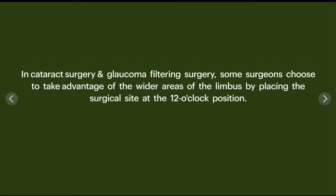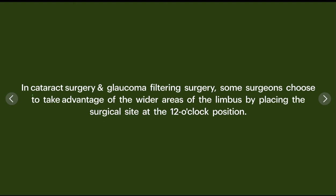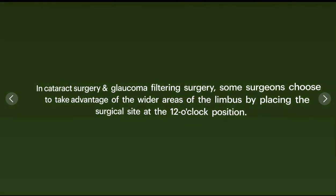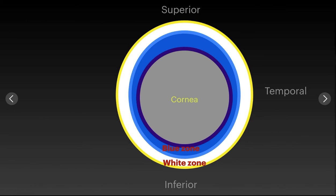Now, why do we need the surgical concept of surgical limbus? It has many clinical applications. Once you understand surgical limbus, it becomes easier to understand and perform ophthalmic surgeries. In cataract and glaucoma surgeries, surgeons usually operate at the superior aspect of the limbus at 12 o'clock, because the blue zone is widest superiorly, giving more space for incisions and surgical manipulation with well-delineated landmarks.